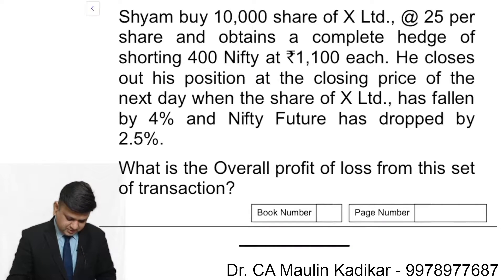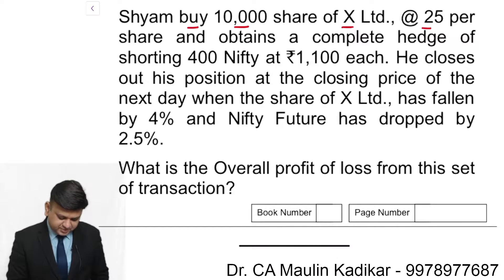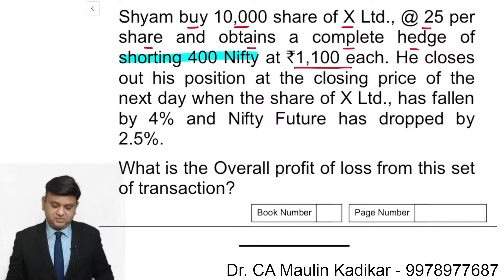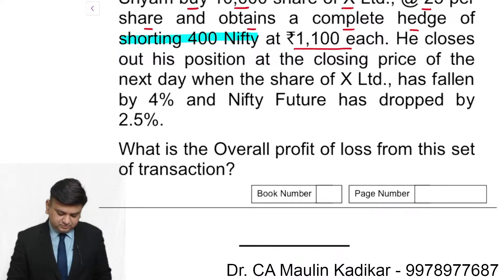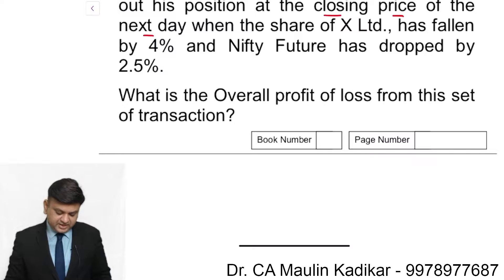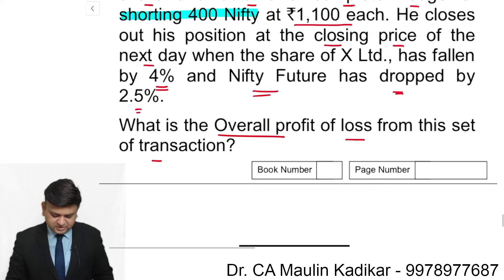Let us see the next question. Shyam purchases 10,000 shares of X Limited at the rate of rupees 25 per share and obtains a complete hedge of shorting 400 Nifties at the rate of 1,100 each. He closes out his position at the closing price of the next day when the share of X Limited has fallen by 4% and Nifty futures has dropped by 2.5%. What is the overall profit or loss from this set of transactions?